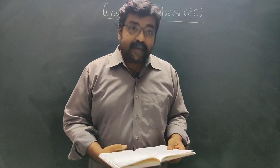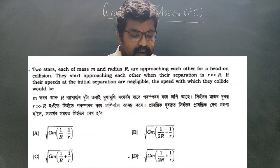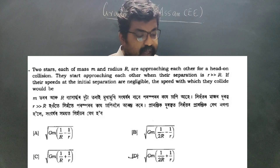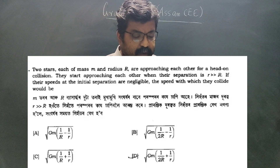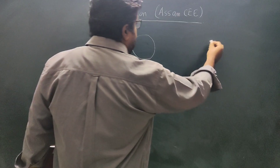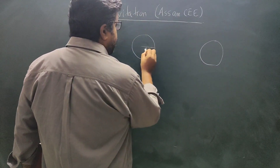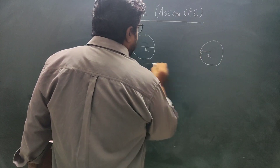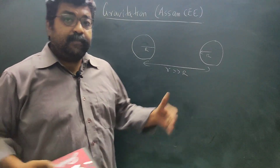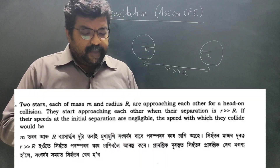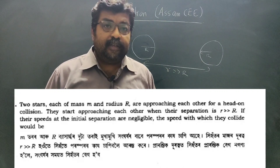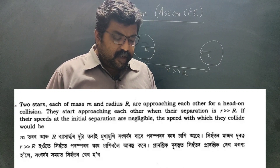In 2014, the question is: two stars, each of mass M and radius R, are approaching each other for a head-on collision. Their initial separation is much greater than R. If their speeds at initial separation are negligible, find the speed with which they collide.